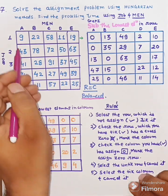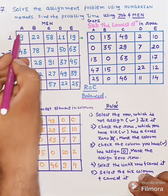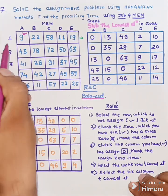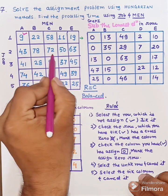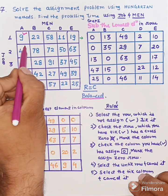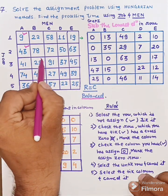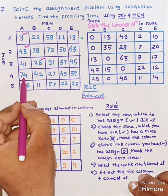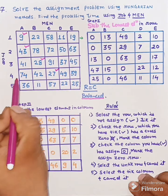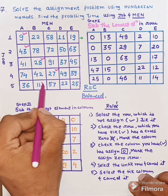Our first step is to subtract the lowest element in each row. The lowest element in the first row is 9. In the second row, the lowest element is 43. In the third row, the lowest element is 28. In the fourth row, the lowest element is 27. And in the fifth row, the lowest element is 11.